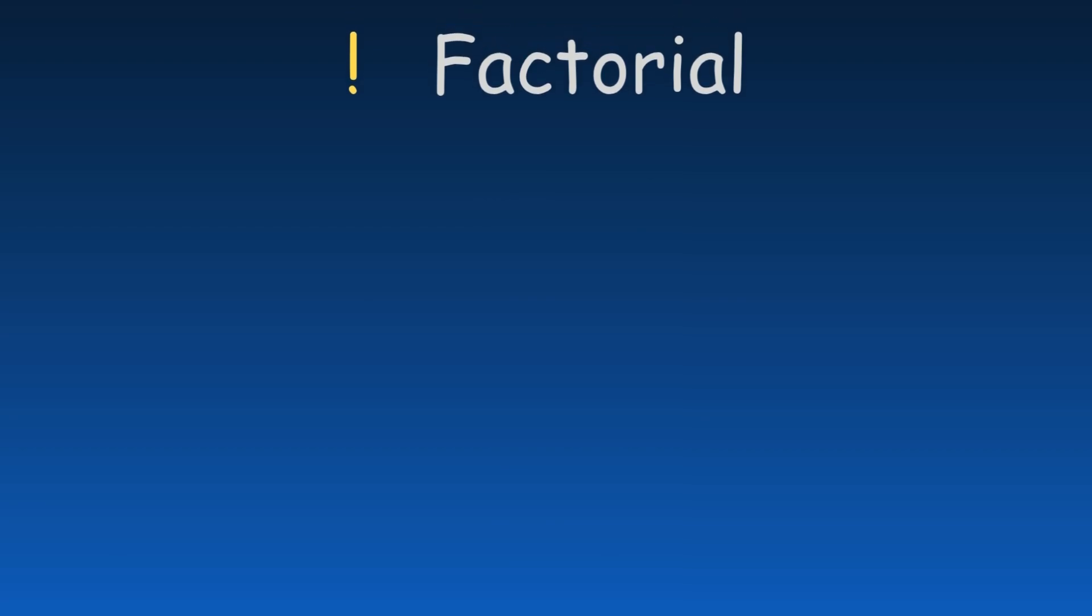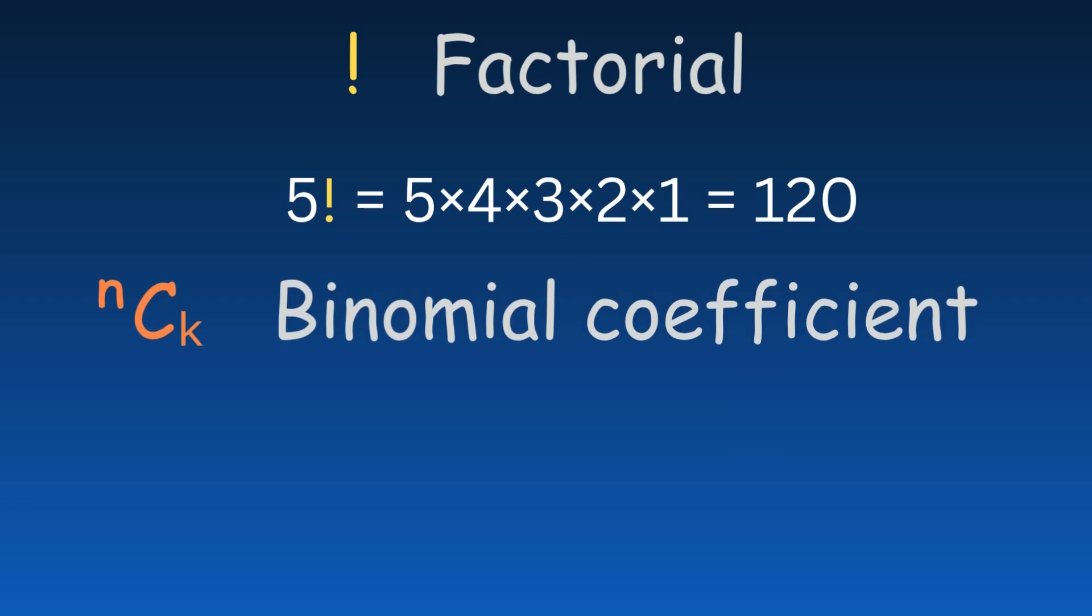A factorial multiplies a number by all positive integers less than it. The binomial coefficient, which looks like a fraction without a line, indicates the number of ways to choose k elements from a set of n.